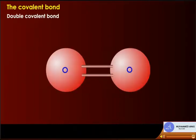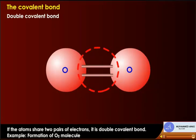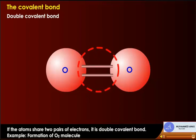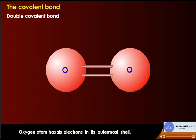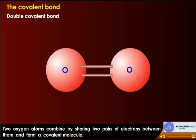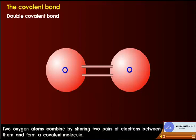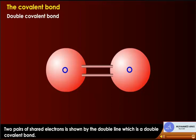Double covalent bond: if atoms share two pairs of electrons, it is a double covalent bond. For example, in the formation of the O2 oxygen molecule, oxygen has six electrons in its outermost shell. Two oxygen atoms combine by sharing two pairs of electrons between them to form a covalent molecule. Two pairs of shared electrons are shown by a double line, which is a double covalent bond.